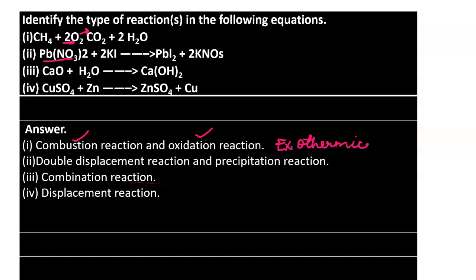Next, lead nitrate reacts with potassium iodide to form lead iodide (as a precipitate) and potassium nitrate (KNO3). This is a double displacement reaction because it involves the exchange of ions - lead combines with iodide and potassium combines with nitrate. Since a precipitate (lead iodide) is formed, it is also a precipitation reaction.